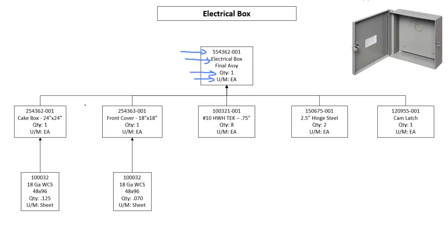The parts on the second row are fed into the electrical box final assembly. One cake box, one front cover, eight tech screws, two hinges, and one cam latch all feed into this electrical box final assembly.